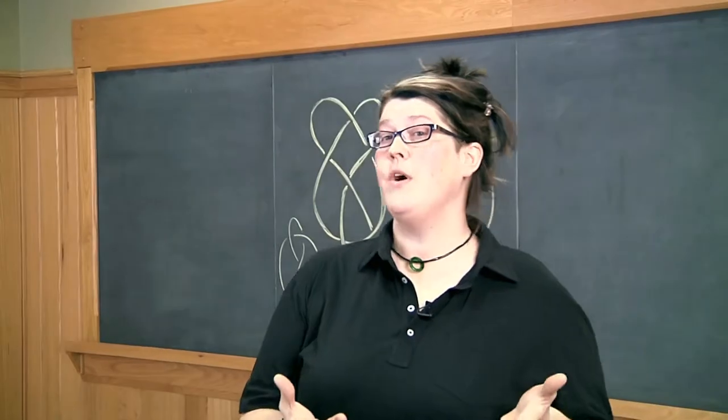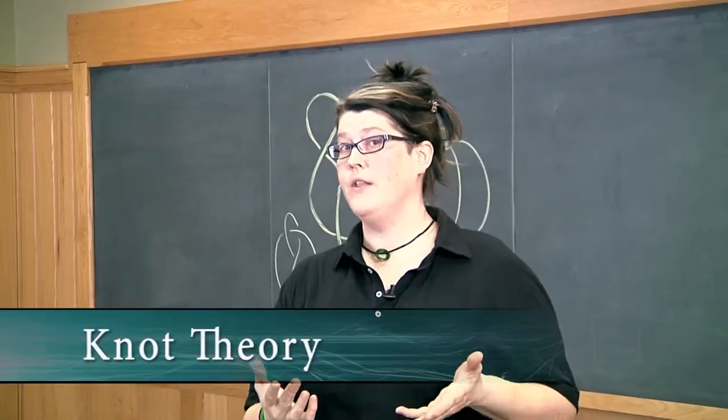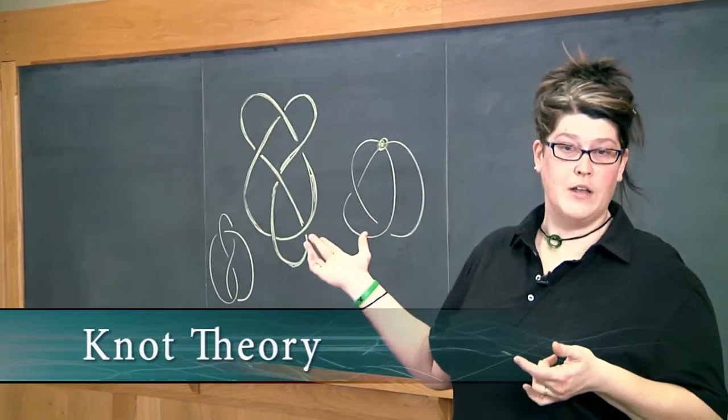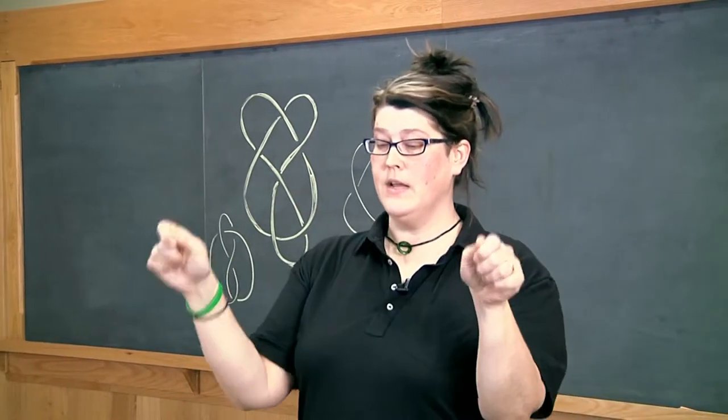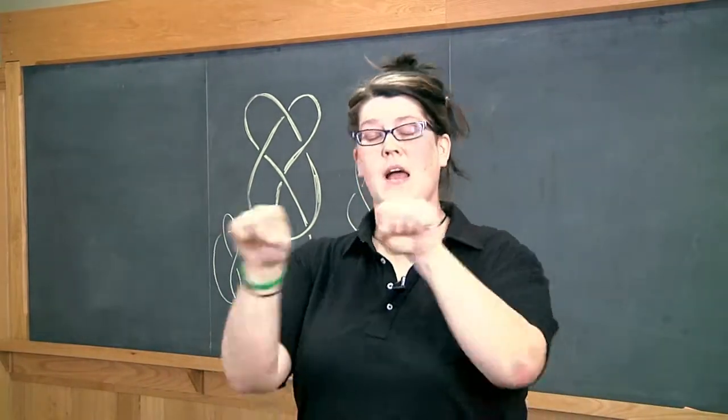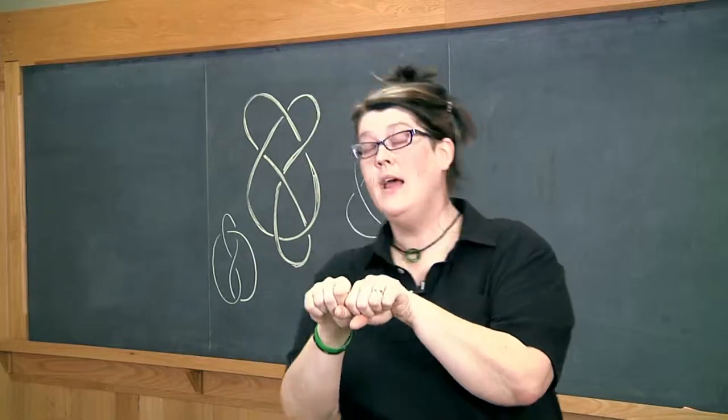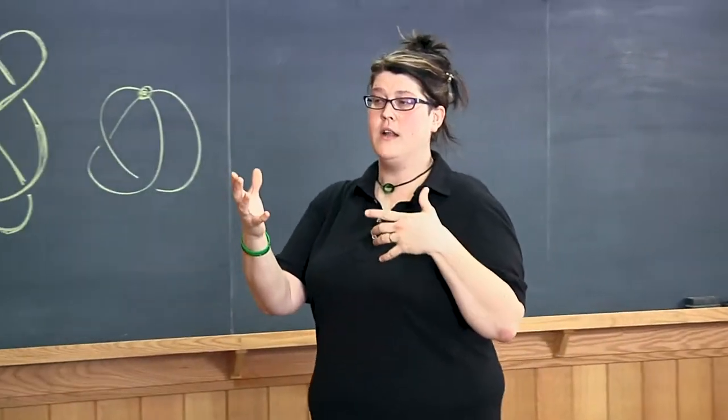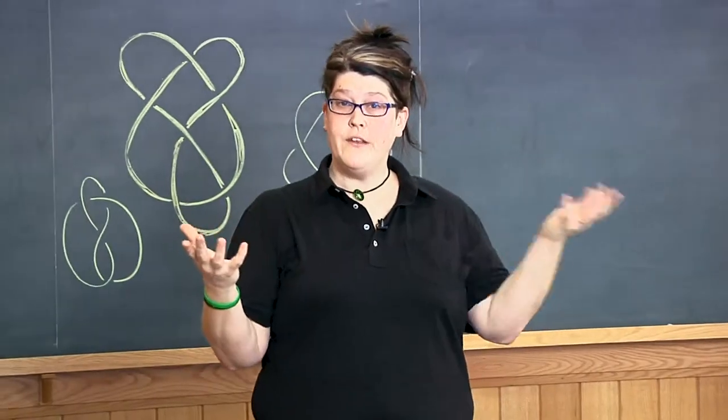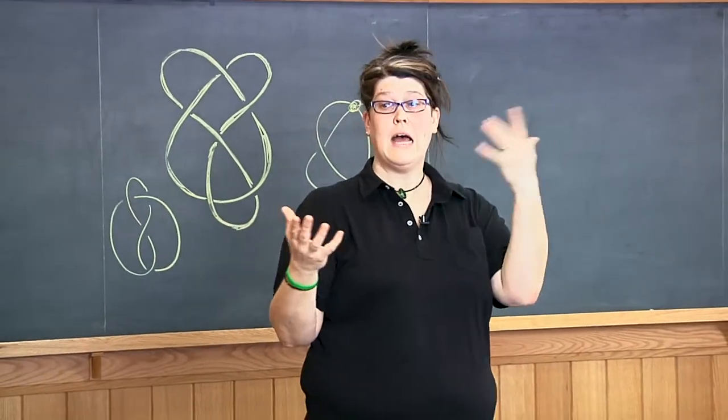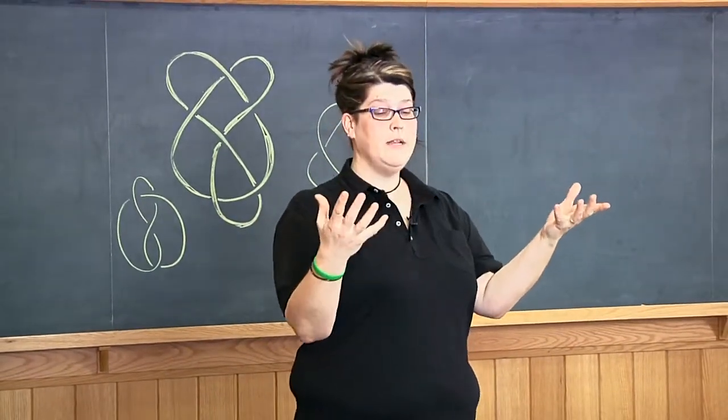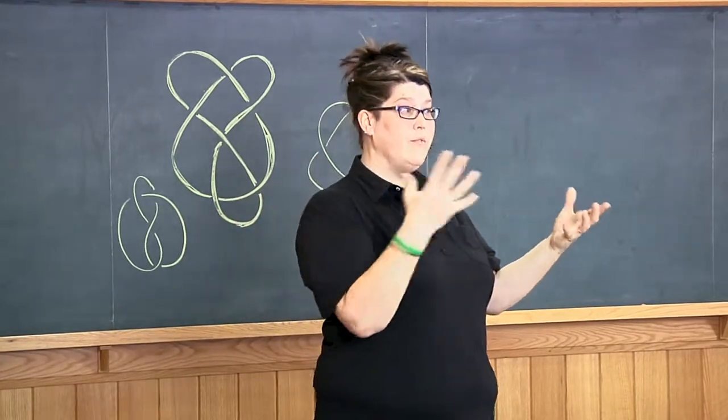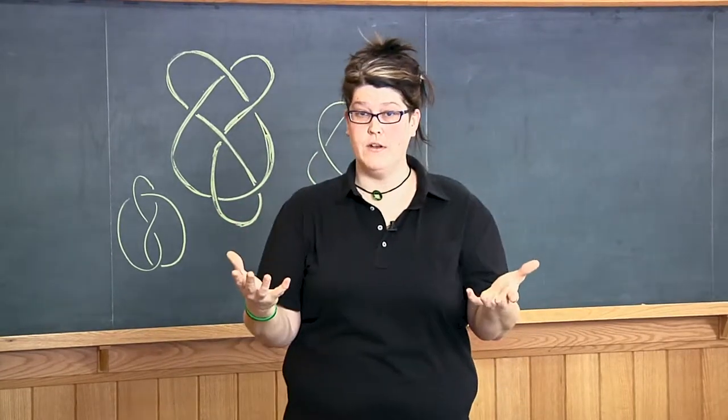The example I want to start with is knot theory. You see behind me some knots drawn on the board. A knot is just a string that's been knotted up in some way and then the ends have been attached together again. The kind of thing we want to know about knots is when are two knots the same and when are two knots different. If I take a piece of string and tie it up in one way and take another piece of string and tie it up another way, how can I tell if those are the same knot or different knots?